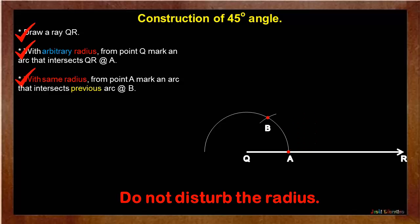After that, with same radius from point B, mark an arc that intersects first arc at point C.